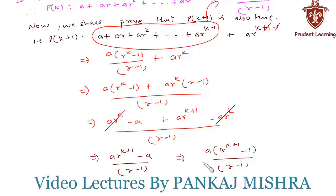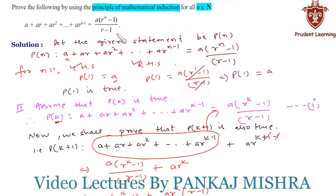Thus P(k+1) is true whenever P(k) is true. Hence, by the principle of mathematical induction, P(n) is always true for all natural numbers n. This completes our solution.